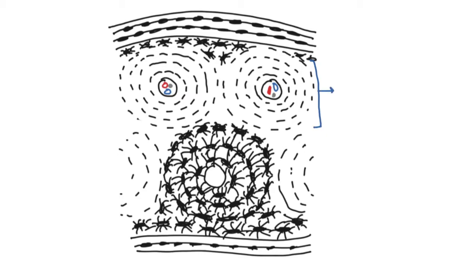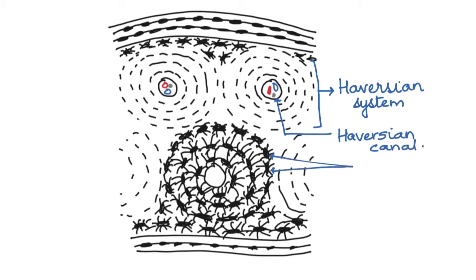Now one such structure is what we call as a Haversian system. In the center of the Haversian system is present a Haversian canal. Inside the canal there are blood vessels and nerves that supply nutrients and take away the waste from the osteocytes.